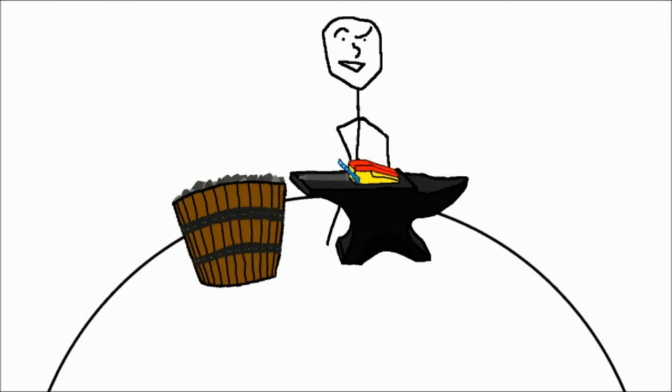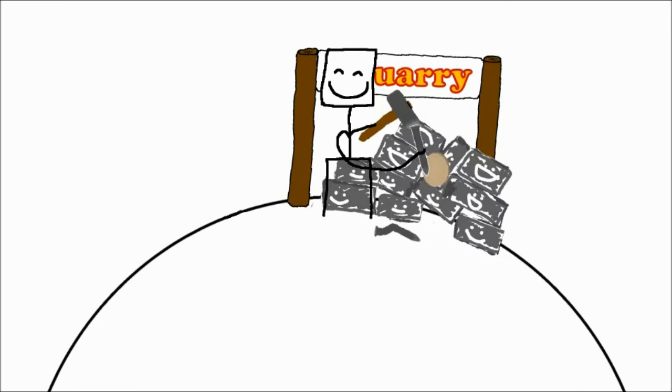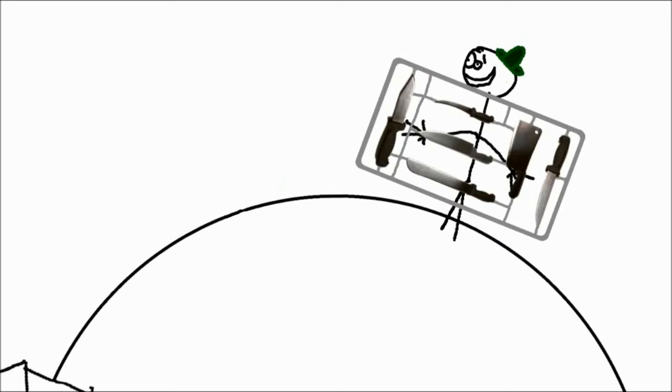Now the blacksmith then makes the chisel for the mason, and the mason finishes making the stone for the cutler, who finishes making the knives for the butcher.